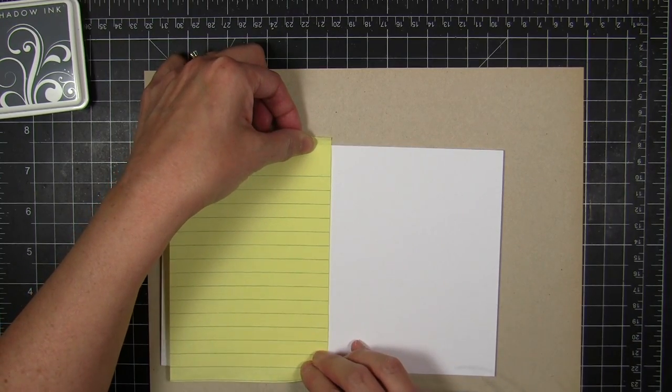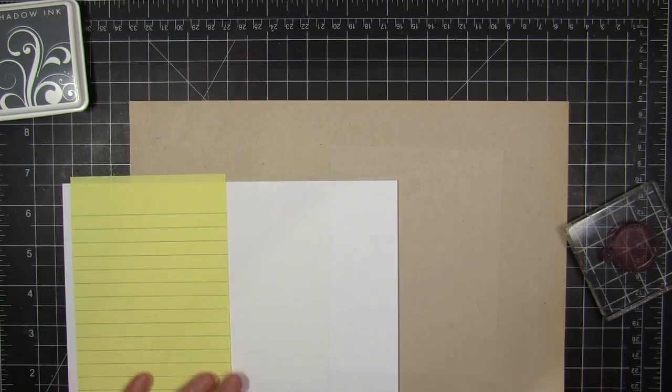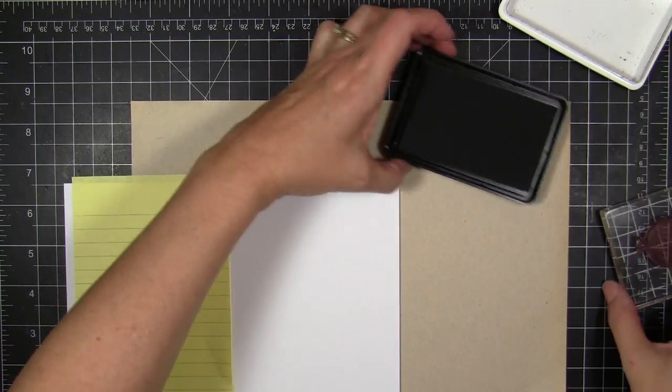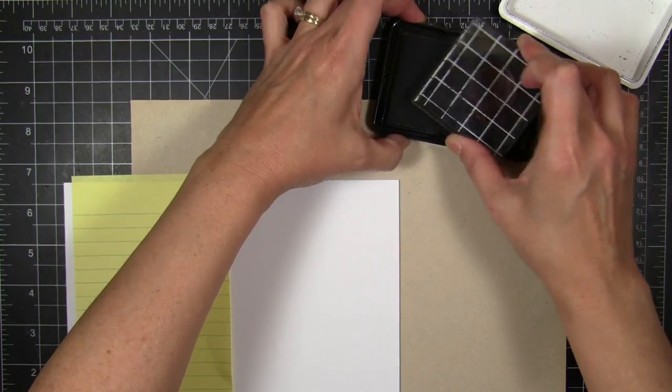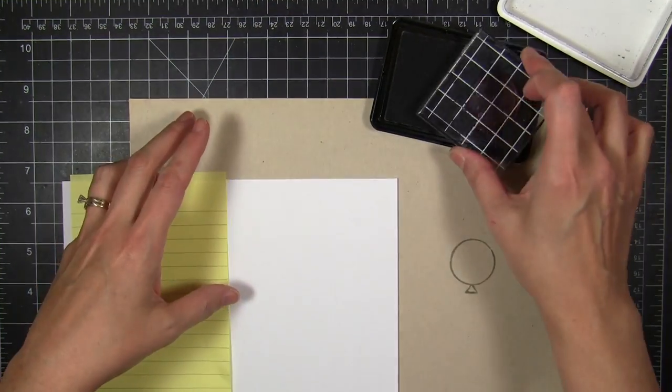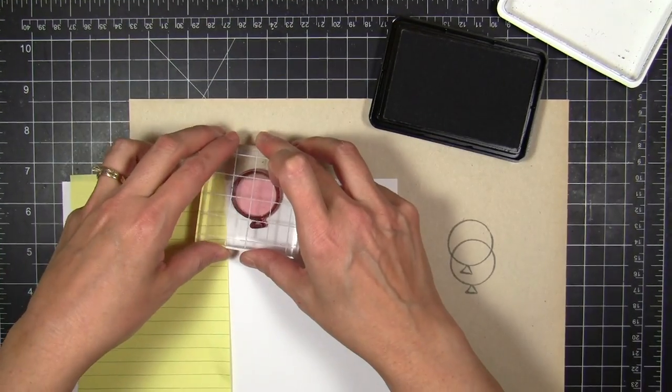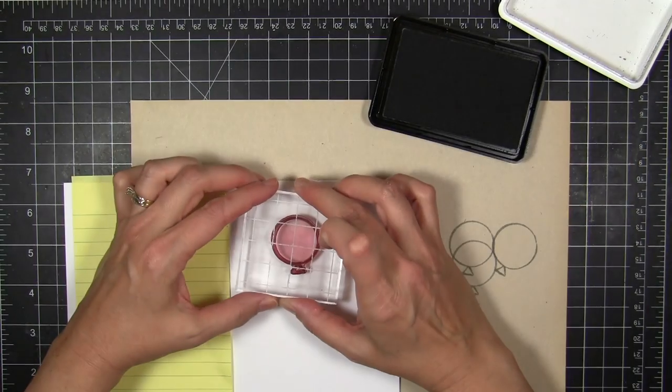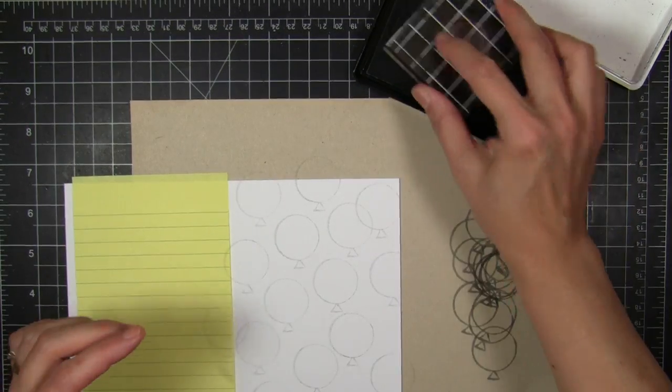I'm going to start by taking some Neenah Solar White cardstock. This is 110 pound and I've already scored it. And I'm going to mask off along the score line there because I find that not only does it help protect the back side of the card, but it helps me as I'm planning the placement of all the images because I can visualize where it's all going to go.